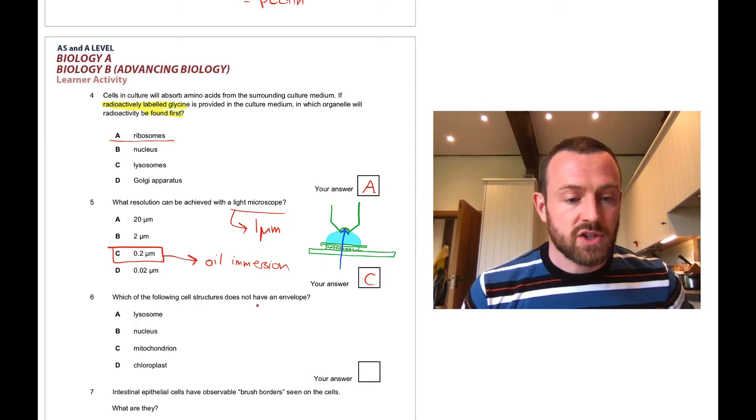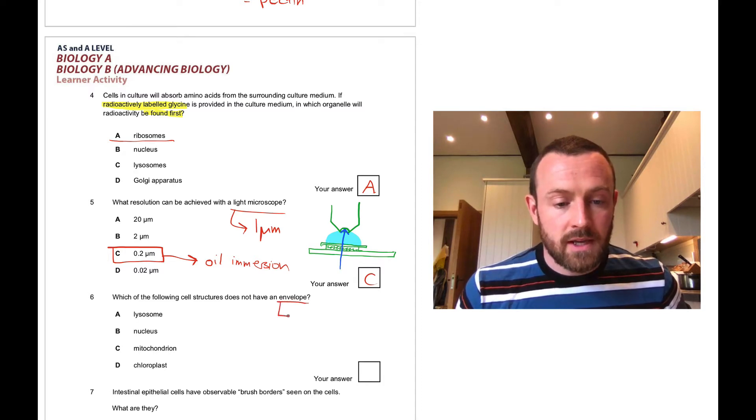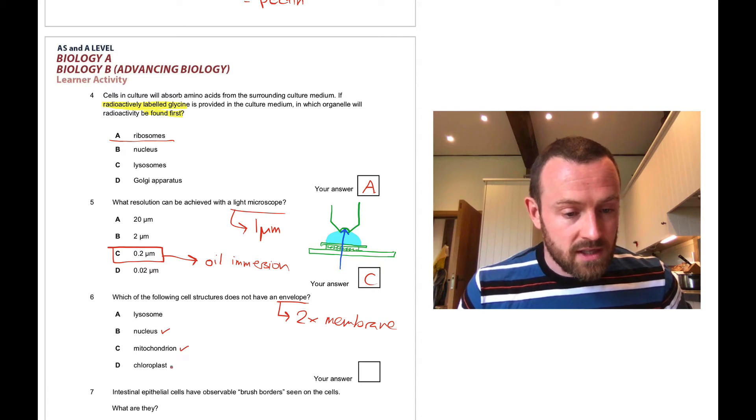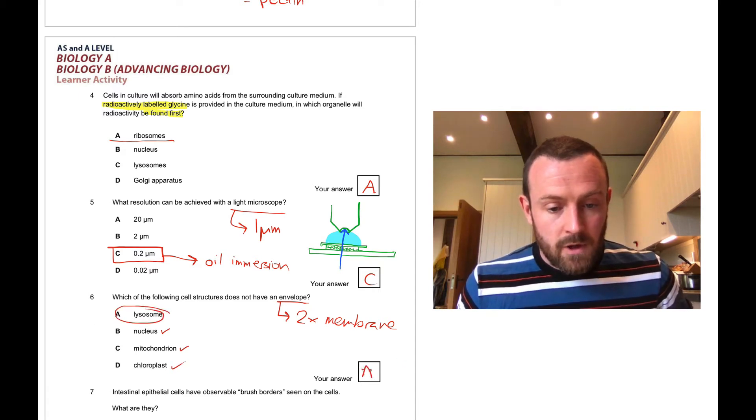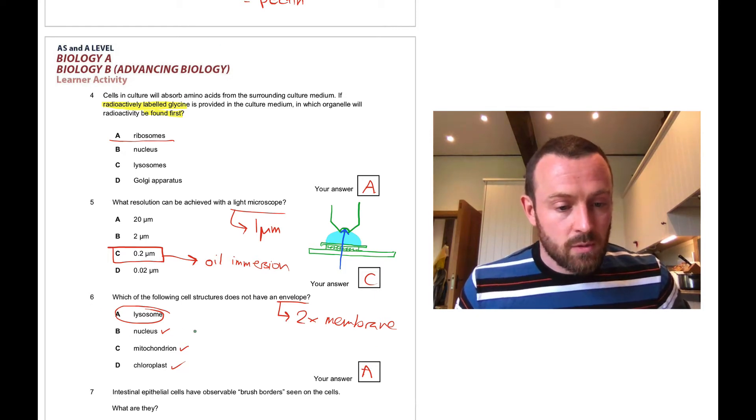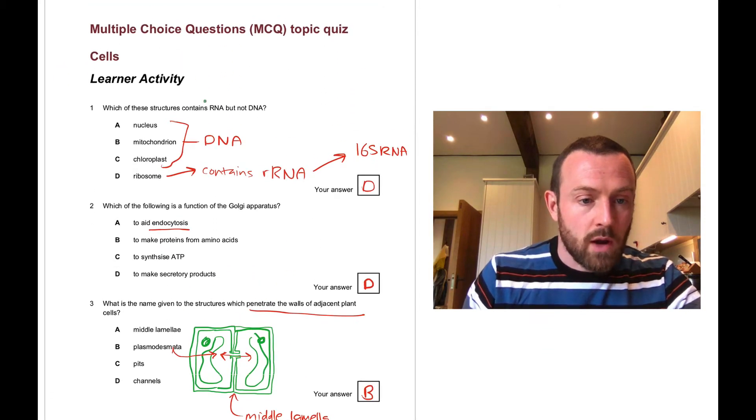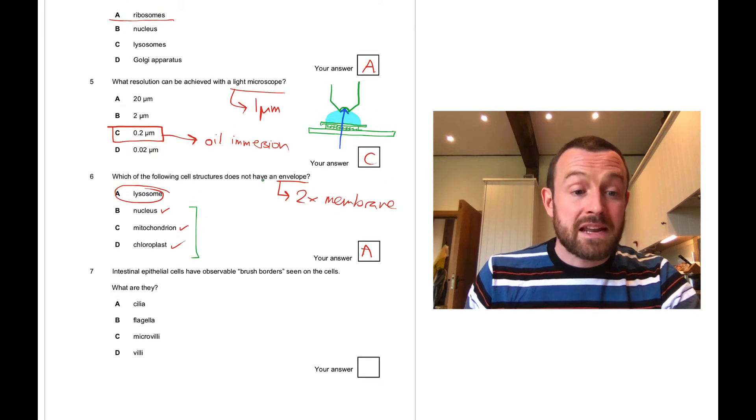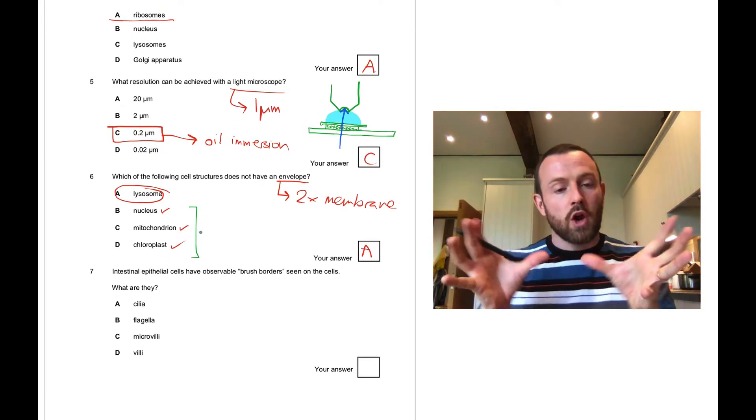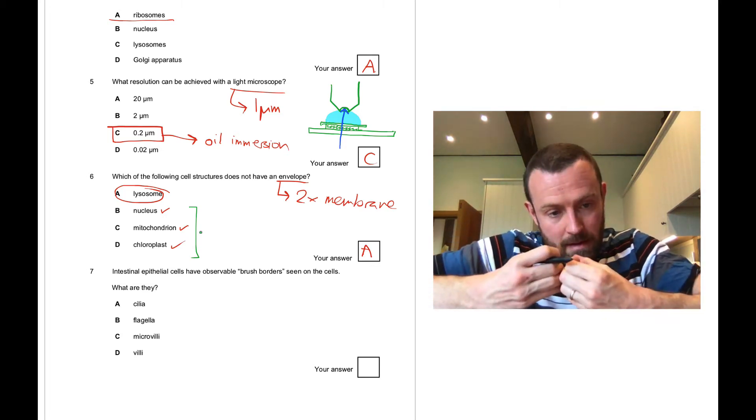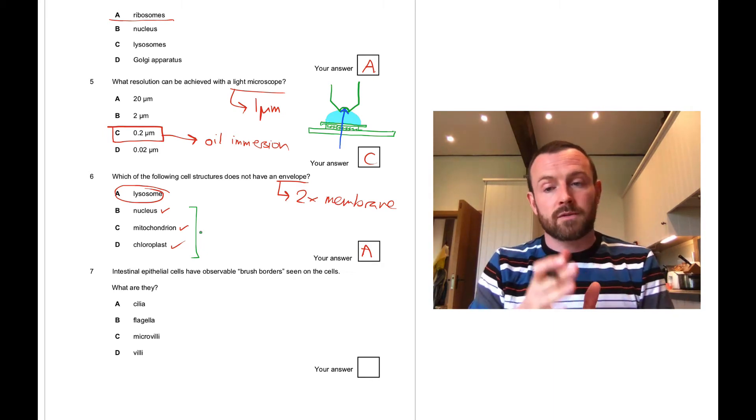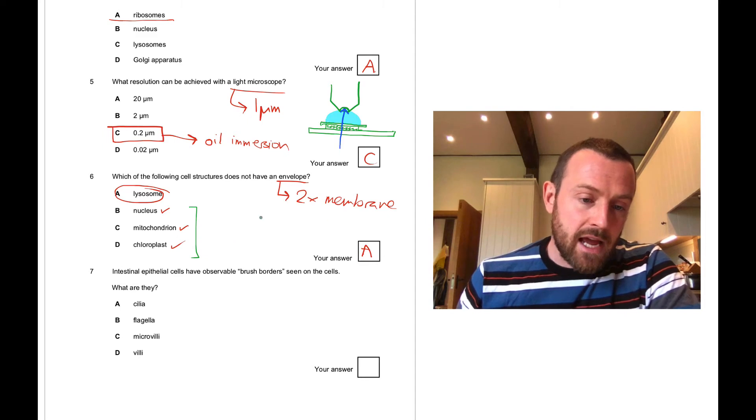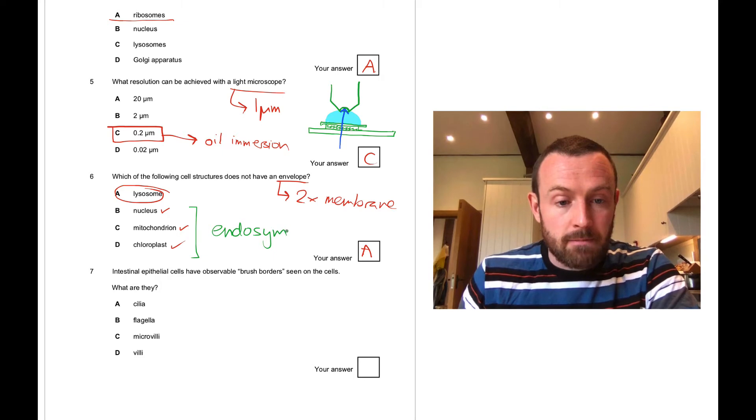Question six: which of the following cell structures does not have an envelope? Remember, an envelope is a double membrane. Which one does not have a double membrane? This one does have a double membrane, this one does, and this one does. That's lysosome A. Those two things—question six, which is about double membranes, and question one, which is about DNA—these two things taken together are evidence that both mitochondria and chloroplasts used to be their own free-living prokaryotes. Because when they were swallowed up by a larger cell, that process of swallowing generated the two membranes. And the fact that they've got DNA within them also gives us a clue that they used to be able to copy themselves. They were free-living things. So those two things together would be taken as evidence for the endosymbiotic theory.